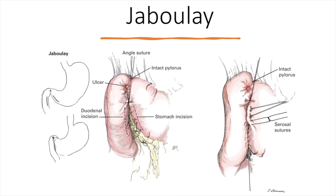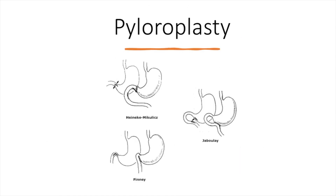To summarize: for the Heineke-Mikulicz, there is an initial longitudinal cut closed transversely with one layer of sutures. The Finney is a tension-free gastroduodenostomy with a longer incision from the antrum to the duodenum, brought together with two layers of sutures. The Jaboulay completely ignores the pylorus with two separate incisions — one in the gastric antrum and one in the duodenum — that are approximated, bypassing the pylorus and allowing gastric content to move from the stomach directly to the distal duodenum.